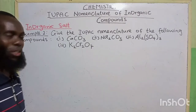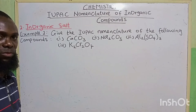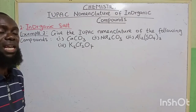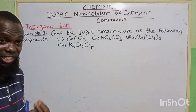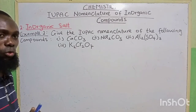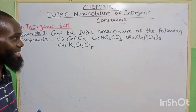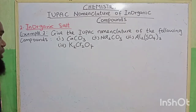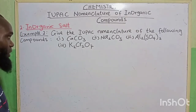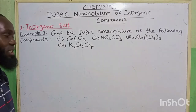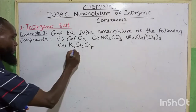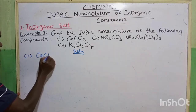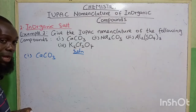The second part, we are going to be looking at inorganic salts. In some classes to come, we are going to look at how to identify salts in chemistry. But before then, let's look at how to get the IUPAC name of inorganic salts. Example 2: give the IUPAC nomenclature of the following compounds. The first one is CaCO₃, which has three elements — calcium, carbon, and oxygen.